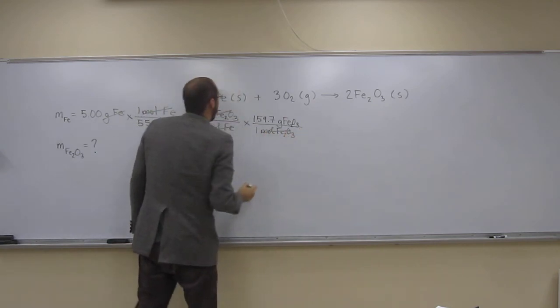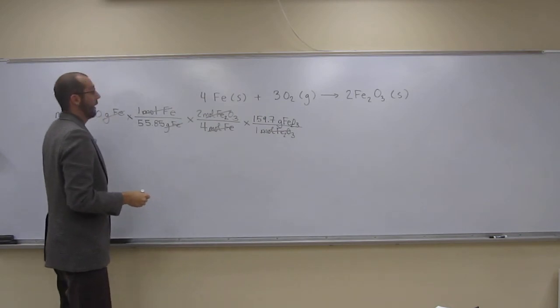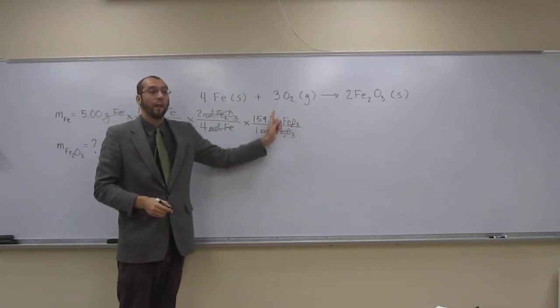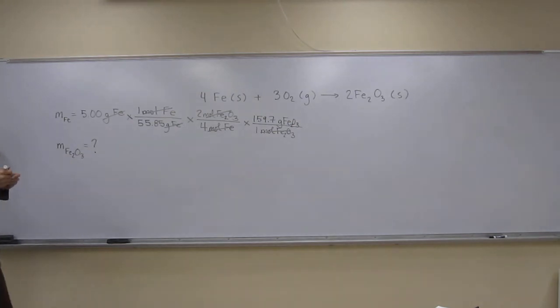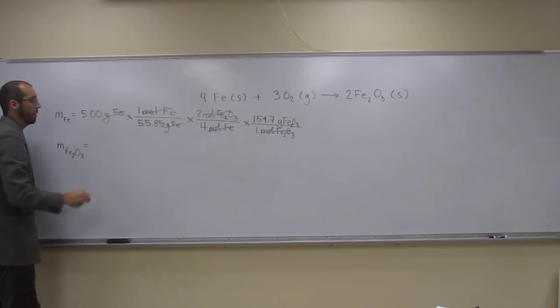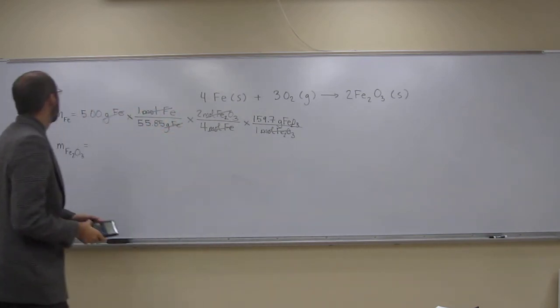Cancel, cancel. And look what we're in now. We're in mass of iron three oxide. Isn't that what we wanted? So we're there. So all we've got to do is do this calculation here and we get the number that we want to three sig figs.